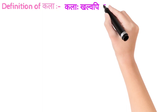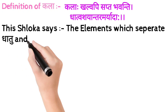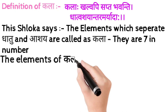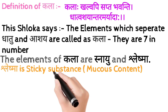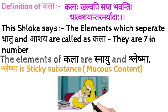Now let's see the definition of Kala. The shloka — 'Kala khalwapi sapta bhavanti, dhatu aashay antar maryada' — says that the elements which separate dhatu and aashay are called Kala, and they are seven in number. The elements of Kala are Snayu and Shleshma. Shleshma is a sticky substance which is mucus content. Now let's see all the seven Kala in detail.